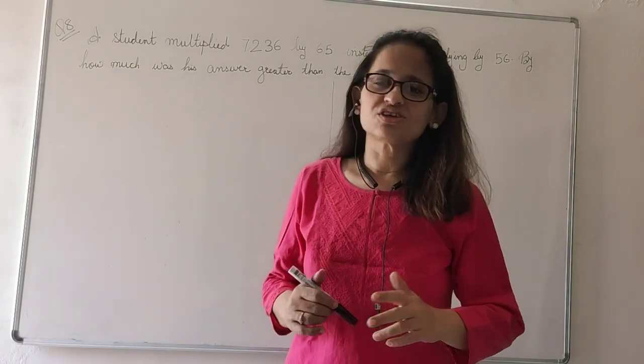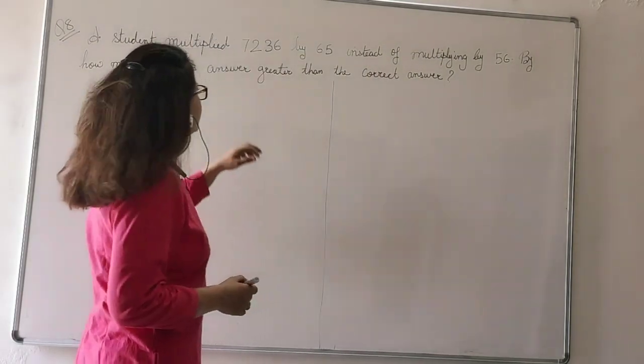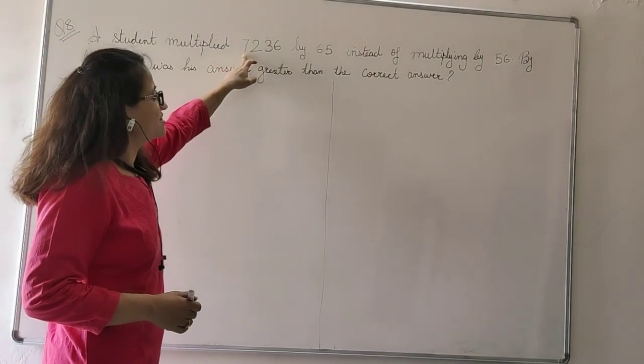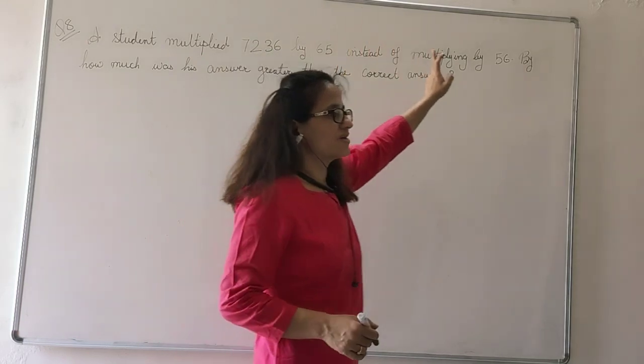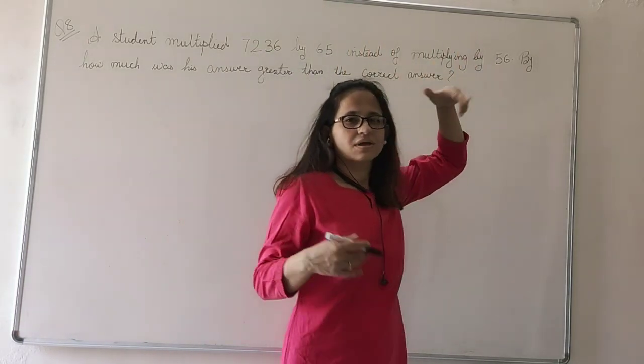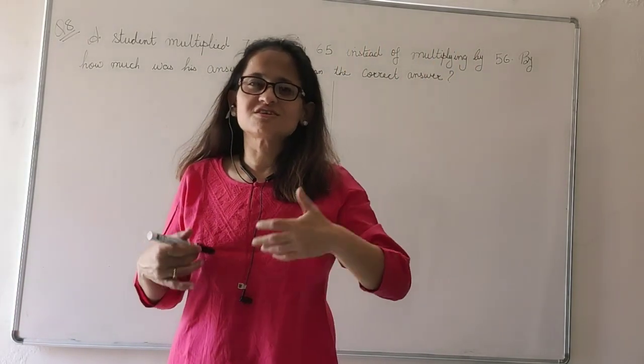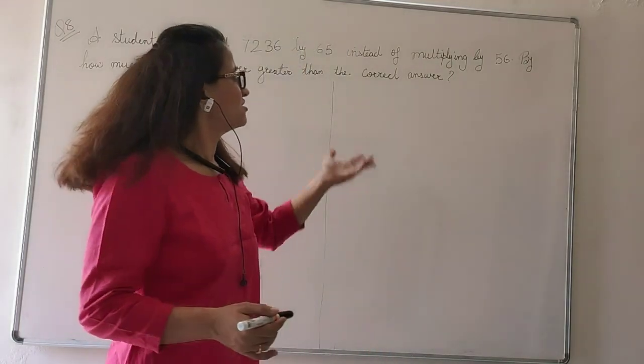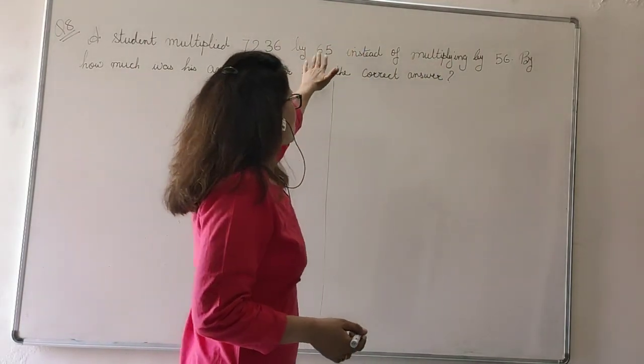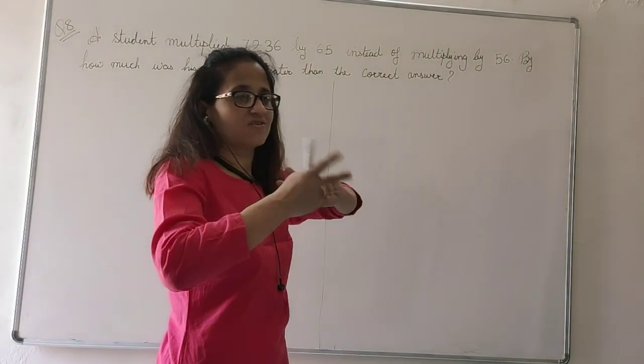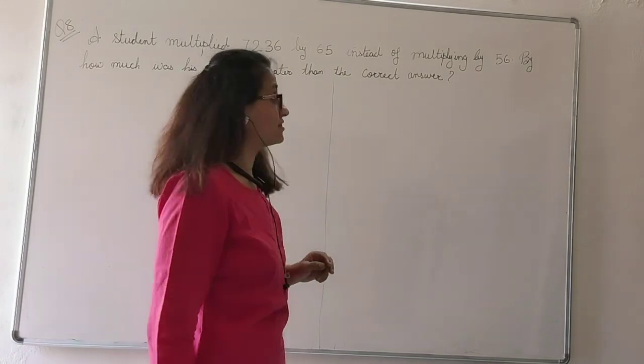The question given to you is you have to multiply 7236 by 56, and out of confusion, nervousness, anxiety, instead of 56 the student wrote 65. He reversed the digits and the number will change. The answer will change.